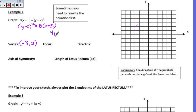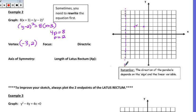For the focus, we need to get the p-value. So 4p — remember this number in front — 4p is equal to 8, so I know I have a p-value of 2. Since this is a y-squared parabola, it's going to be opening either right or left. Since this 8 is positive, it is going to be opening to the right. The focus will be inside the parabola, 2 units this way, and the directrix will be 2 units behind, shown with a dotted line. So our focus becomes the point negative 1, 2.